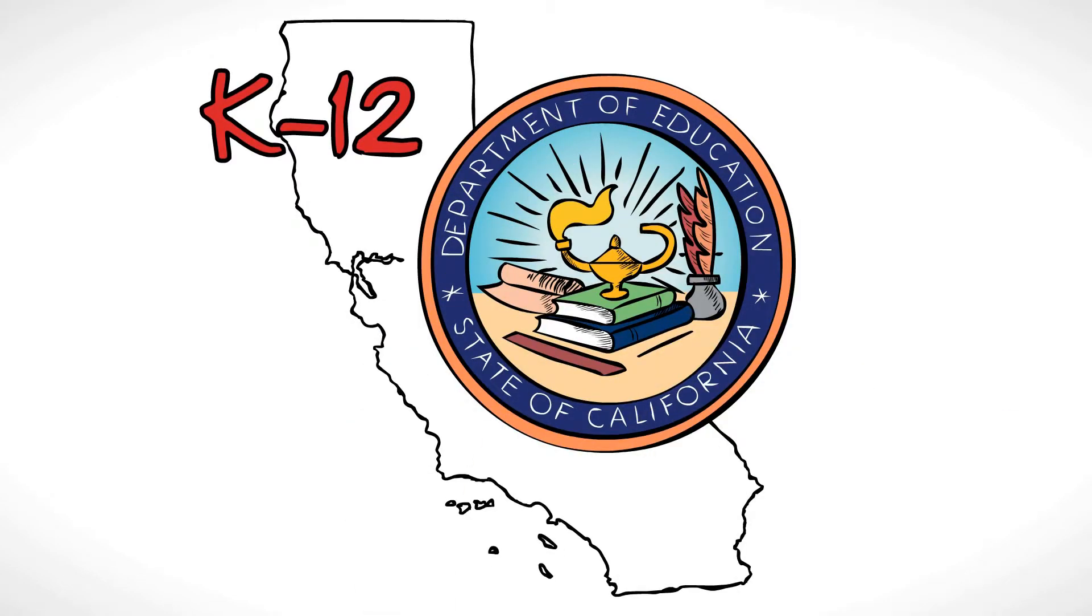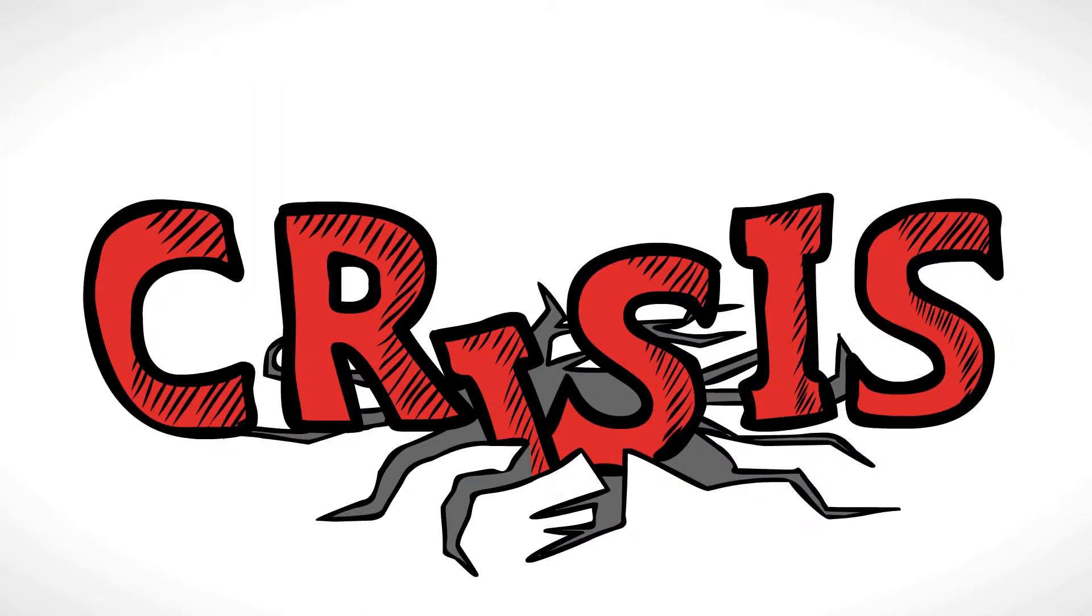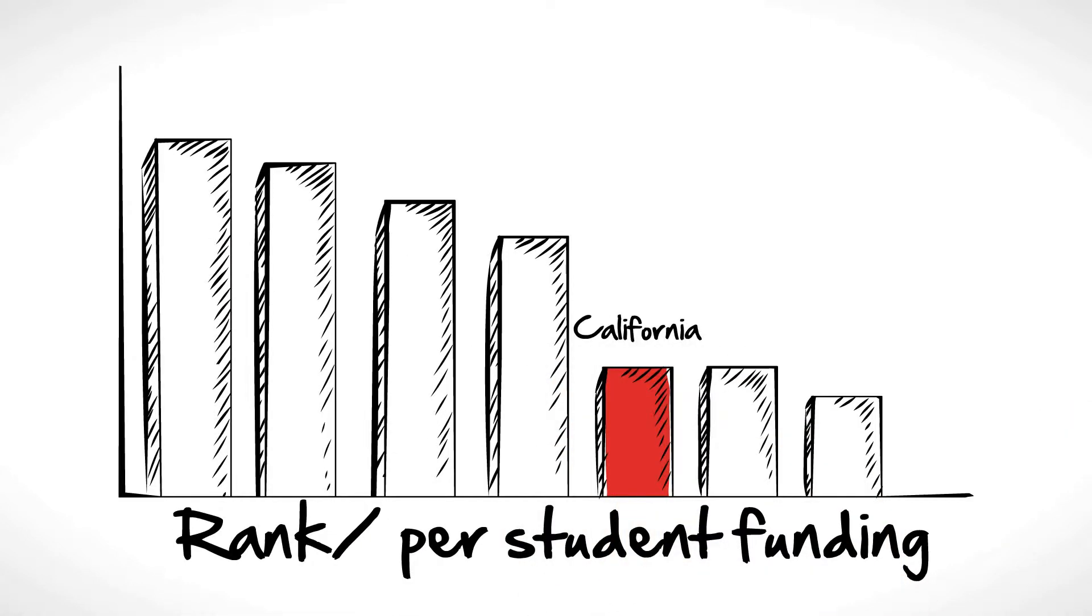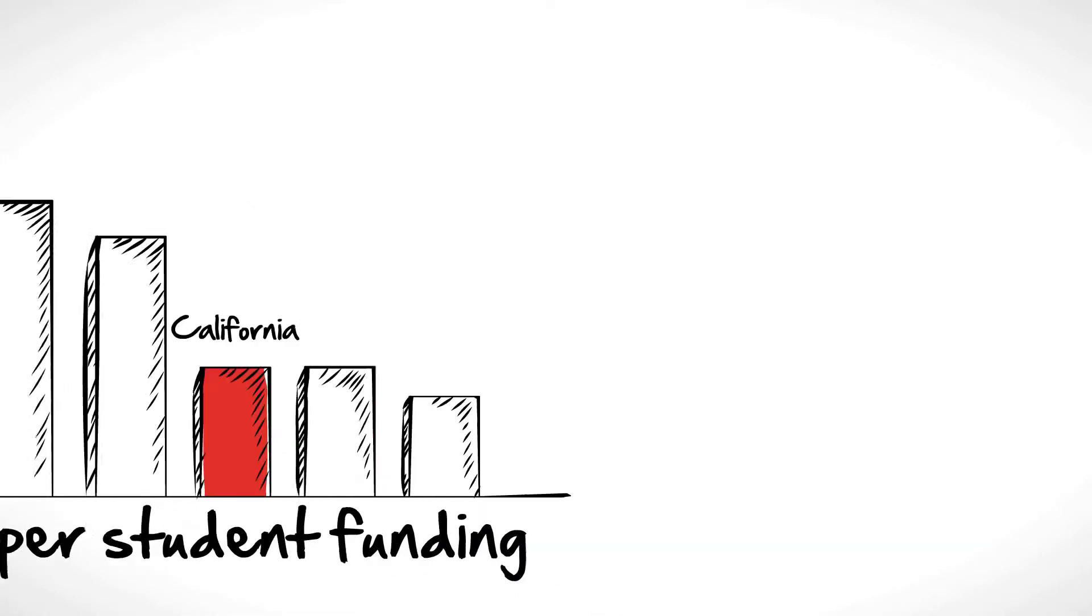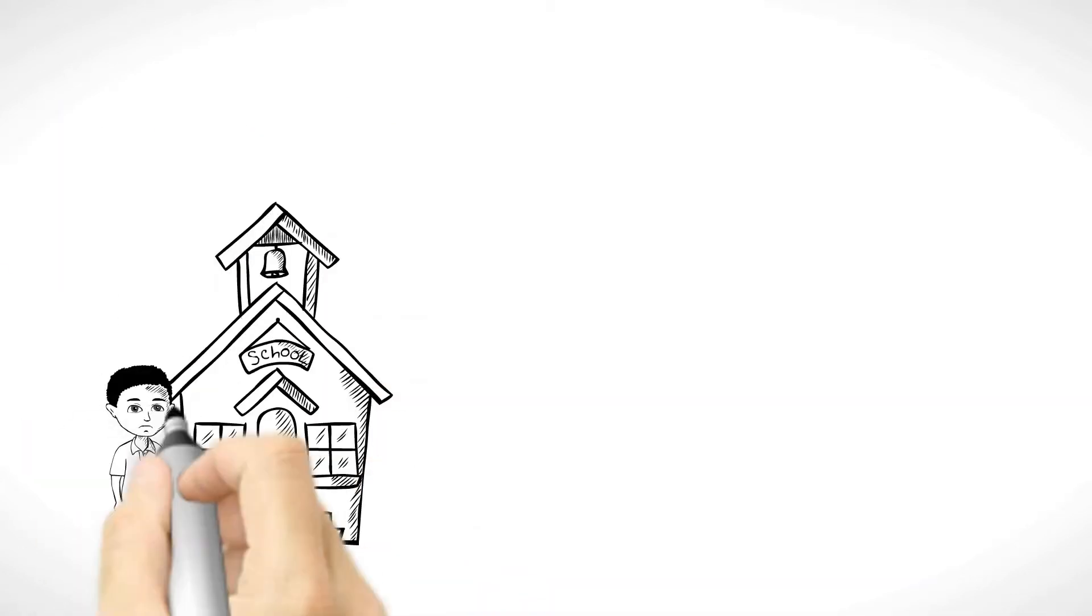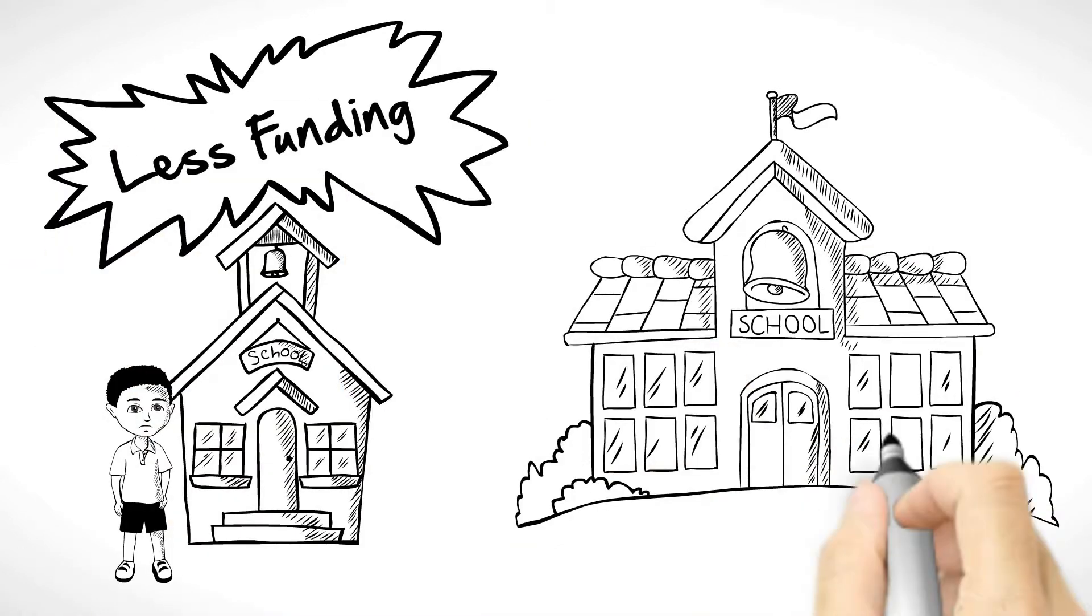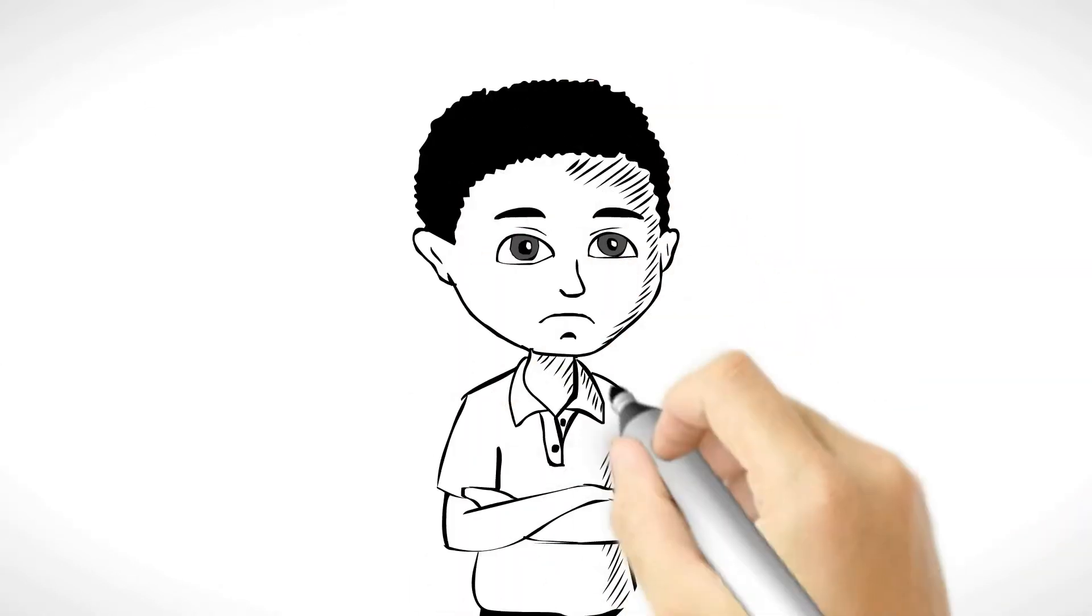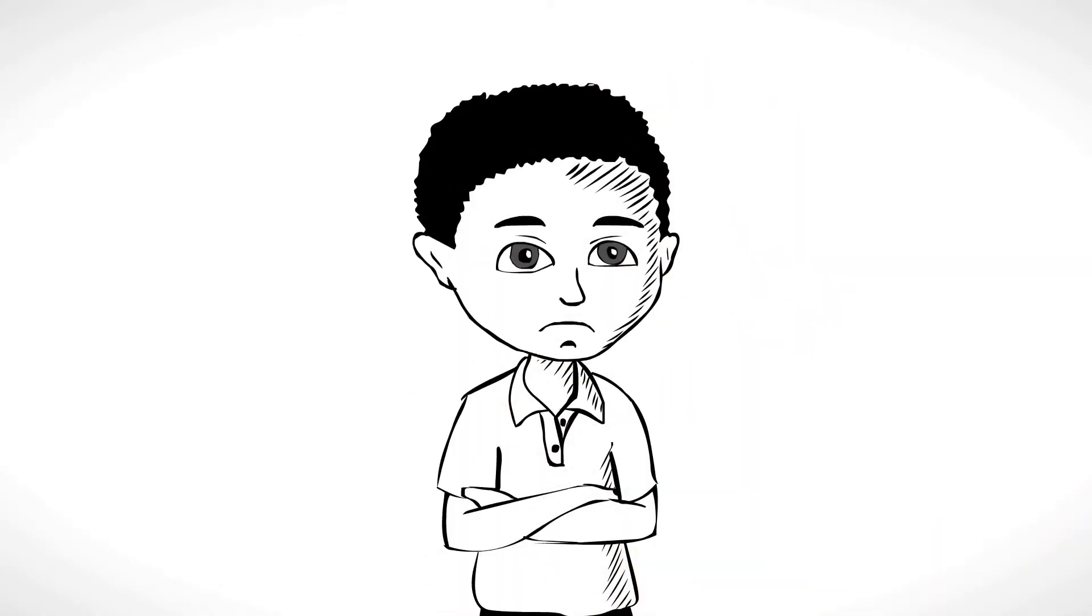K-12 education in California is in crisis. Not only does California rank near the bottom in per-student funding, and spending has been drastically cut, but students in low-income schools receive less funding than kids in well-to-do neighborhoods. This is not fair. This is not right. We can do better.